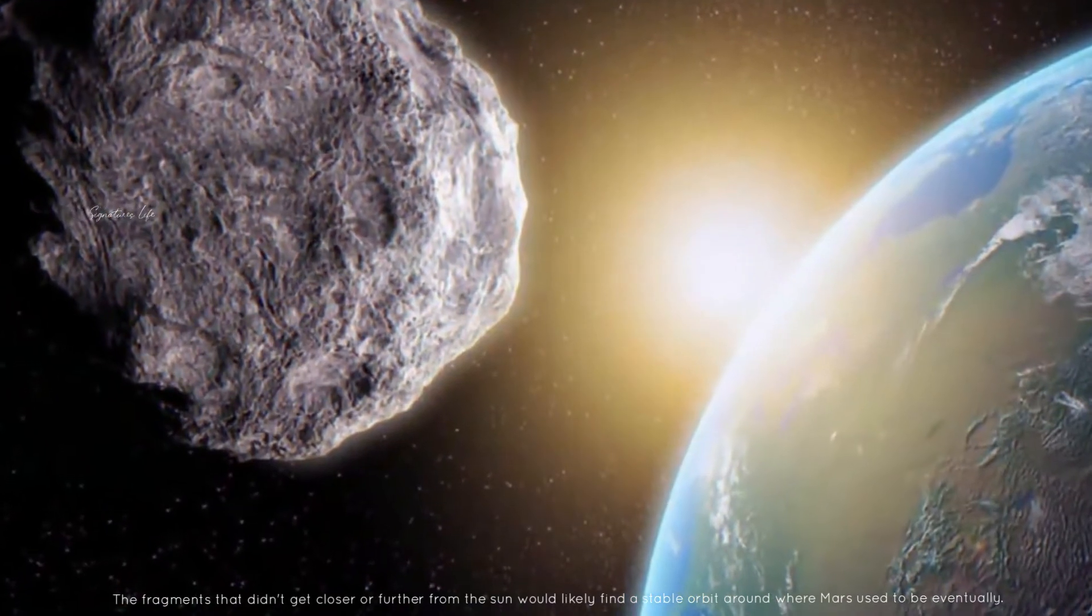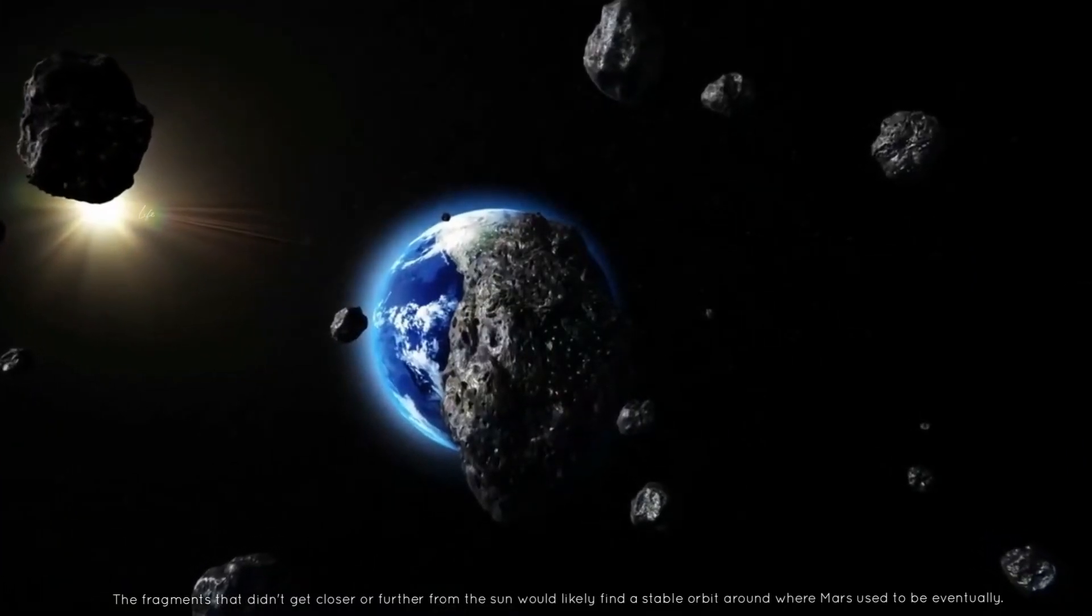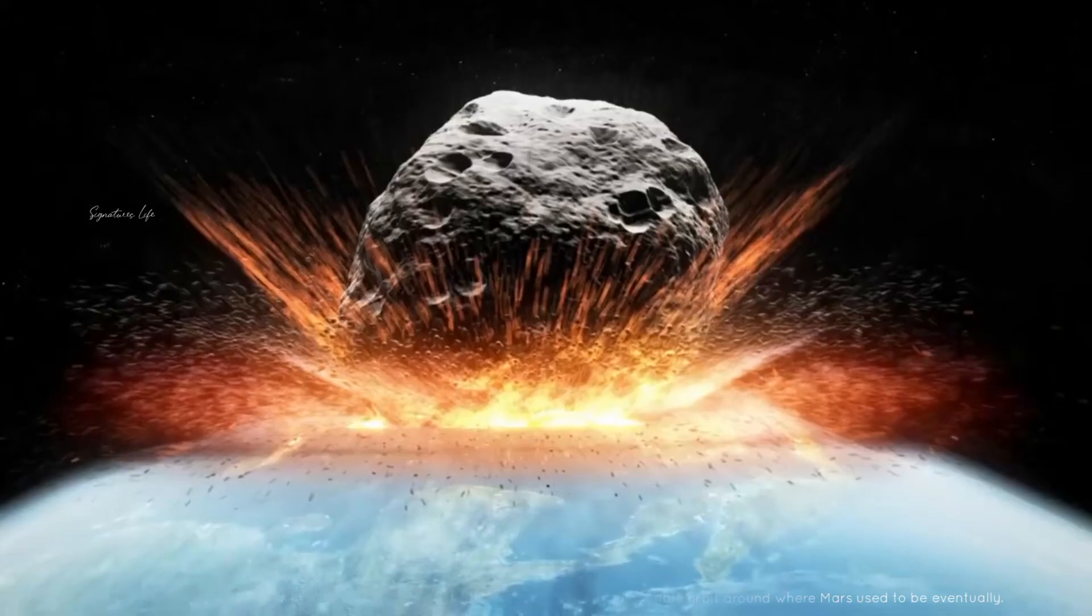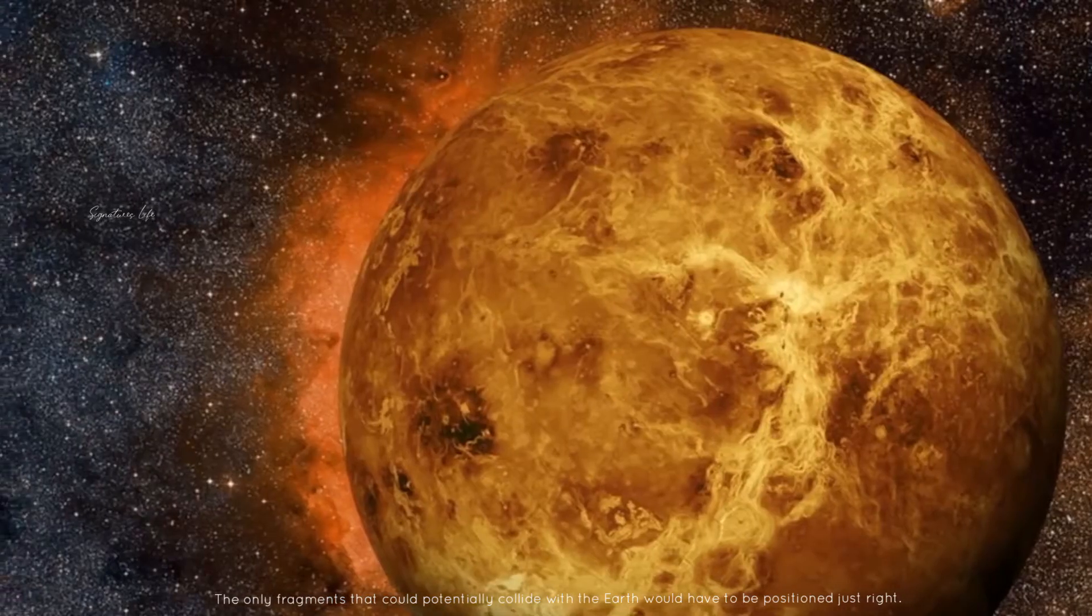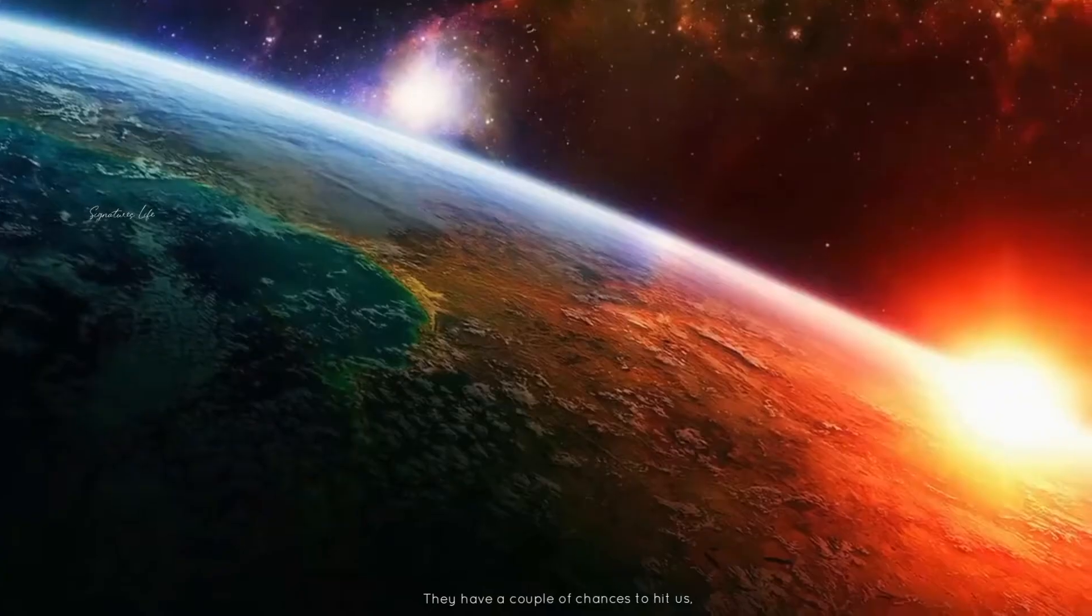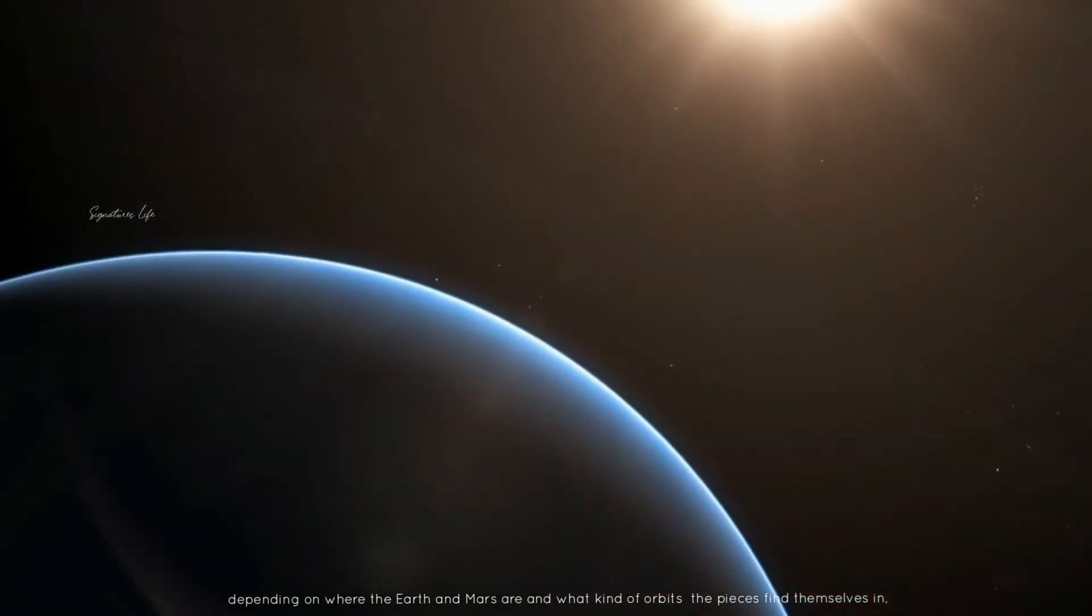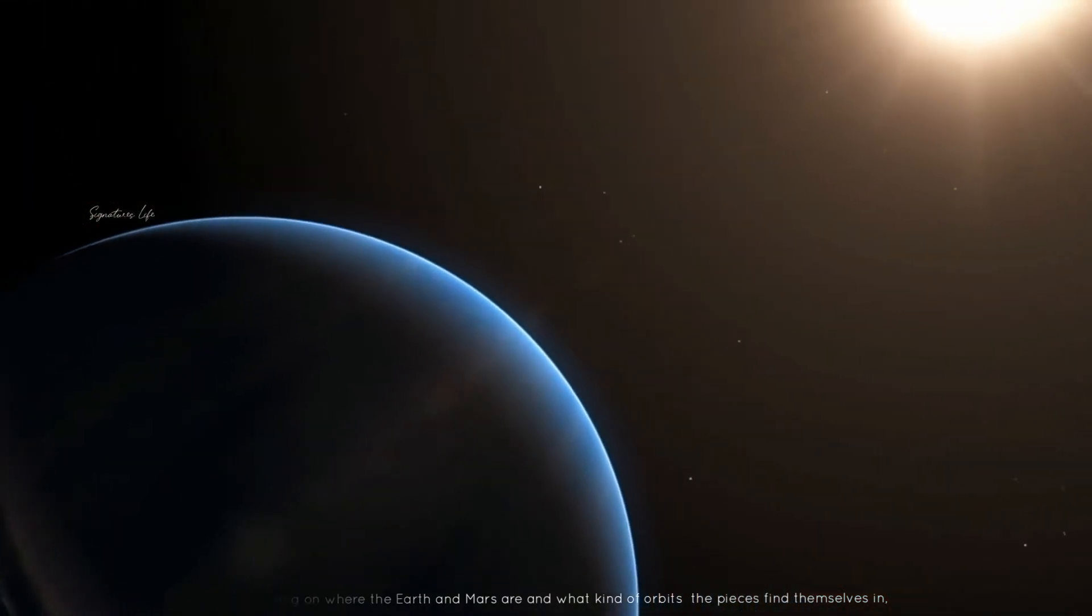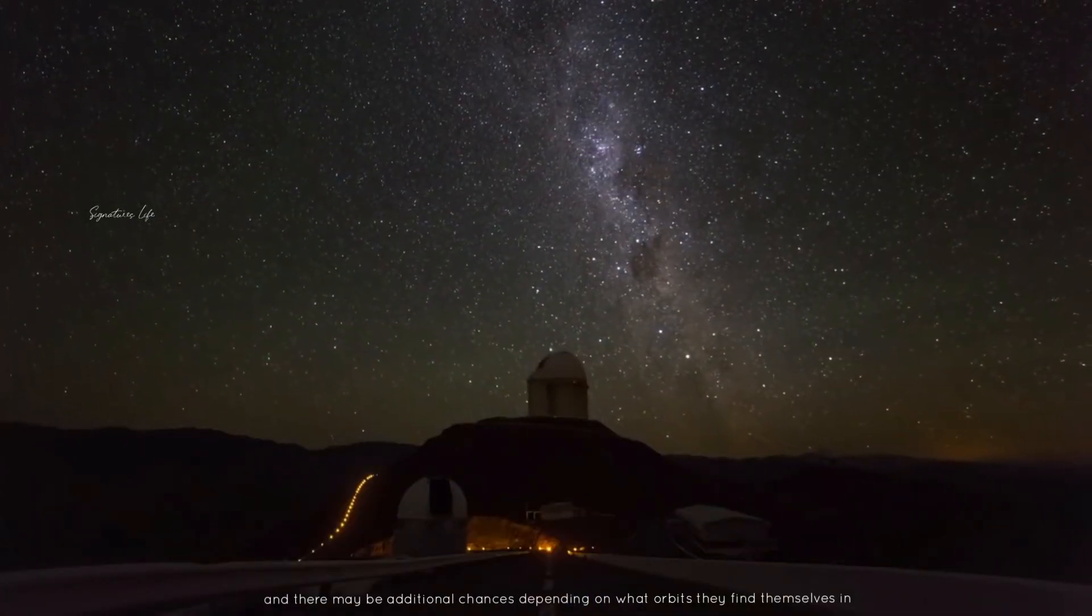The fragments that didn't get closer or farther from the sun would likely find a stable orbit where Mars used to be eventually. The only fragments that could potentially collide with Earth would have to be positioned just right. They have a couple of chances to hit us, depending on where the Earth and Mars are and what kinds of orbits the pieces find themselves in. And there may be additional chances depending on what orbits they find themselves in.